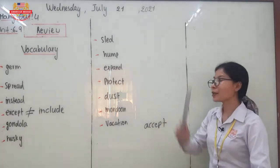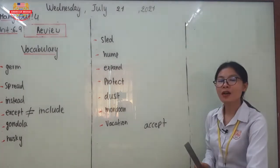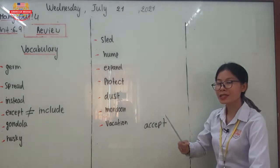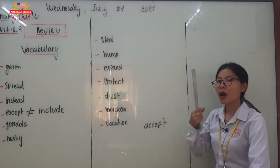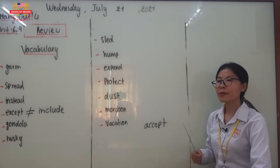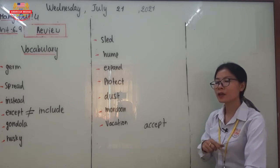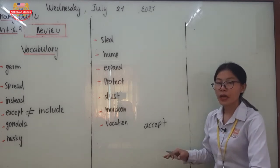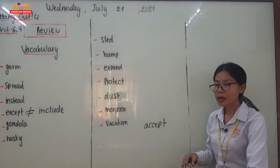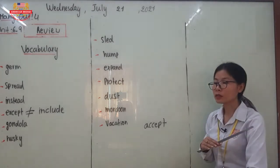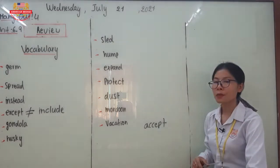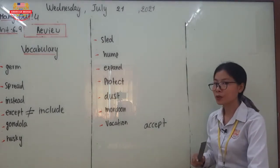Next, let's go to the word 'sled.' Sled refers to the kind of vehicle that people use to ride on the snow. When the road is full of snow, we cannot use a car because it may slip. That's why we use a sled, which is easy to move by using a husky to pull it.